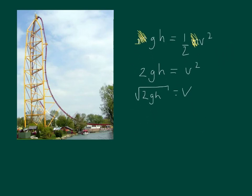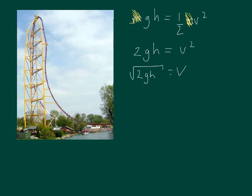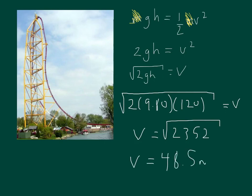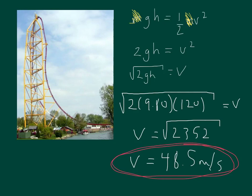To solve for v, we take the square root of 2 times 9.80 times 120, which is the overall height. You'll notice this looks exactly like what we just did. So v equals the square root of 2,352, and taking the square root gives 48.5 meters per second. What that means is if you're at the bottom of the hill and you're given a speed of 48.5 meters per second, you would just make it to the top. Which makes sense — because if you're at the top and come down, you reach 48.5 meters per second. It works both ways, and it does not matter what your mass is. It is mass independent.